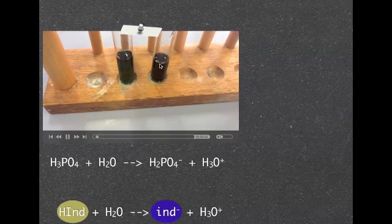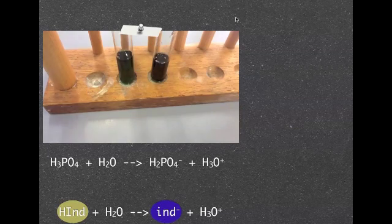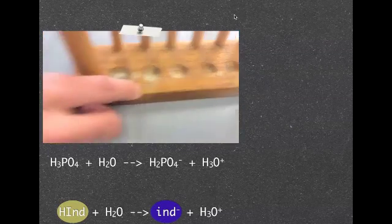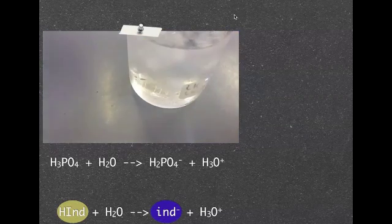Here it is. Obviously I've got my two solutions and I've just put some phosphoric acid and it's got the methyl violet indicator into it.